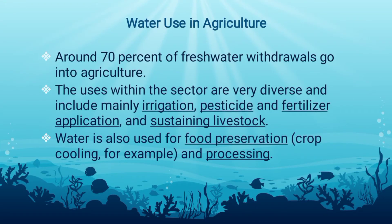Water use in agriculture. Water is a critical input for agriculture. As the human population increases, so too does our use of land for growing food. To make food, we need water. The uses within the sector are very diverse, and it includes mainly irrigation, pesticide and fertilizer application, and even sustaining livestock. Irrigation is the artificial watering of land that does not get enough water through rainfall, and is probably the most important use of water. Currently, agriculture accounts for 70% of all freshwater withdrawals globally. Water is also used for food preservation, crop cooling, and processing.